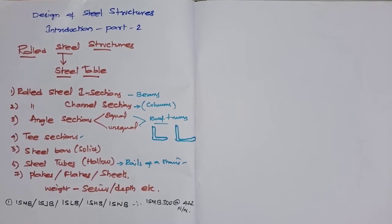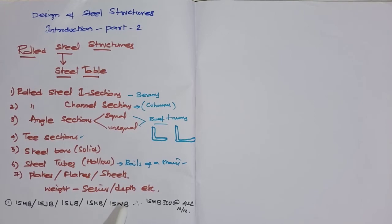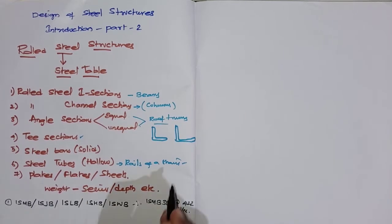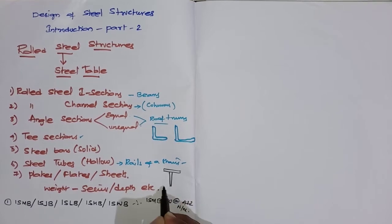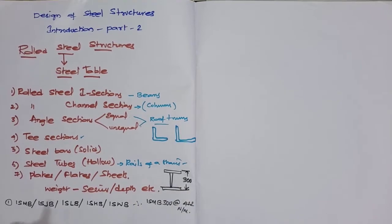For the classification of rolled steel I-sections, they are generally categorized as: Indian Standard Medium Beam (ISMB), Indian Standard Junior Beam (ISJB), Indian Standard Lightweight Beam (ISLB), Indian Standard Heavy Beam (ISHB), and Indian Standard Wide Flange Beam (ISWB). For example, ISMB300 @ 422 N/m means the section per meter length weighs 422 newtons, and 300 refers to its overall depth.